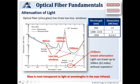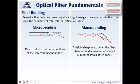Beyond about 1,625 nanometers is where that window ends. Glass is most transparent to light at wavelengths in the near-infrared area of the electromagnetic spectrum.